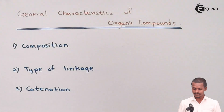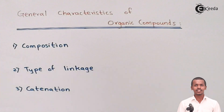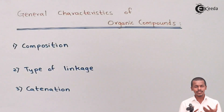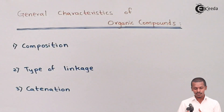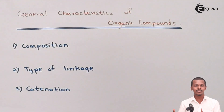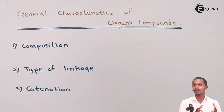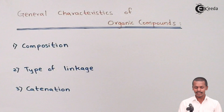Next is Catenation. Catenation is the property of carbon to form long chains, branched chains, or cyclic chain compounds. This property is showcased by carbon atoms and organic compounds, and it is a special or general characteristic of organic compounds.